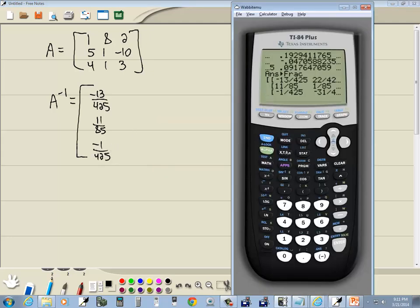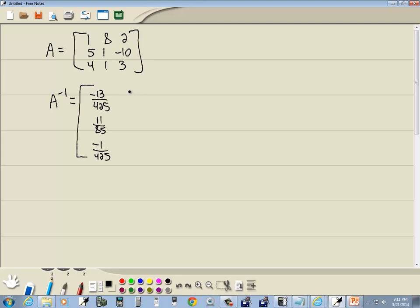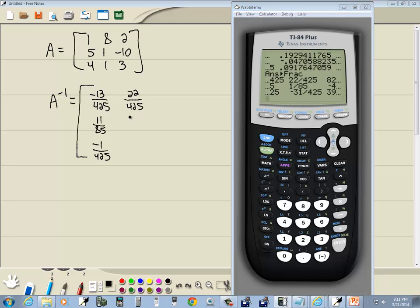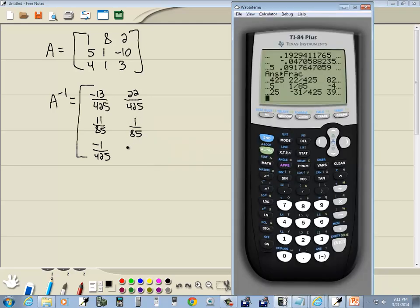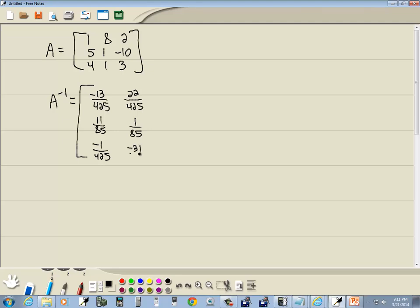And I'm going to scroll over a little bit, so I'll press my right arrow key. And we've got 22 over 425, 1 over 85, and negative 31 over 425.